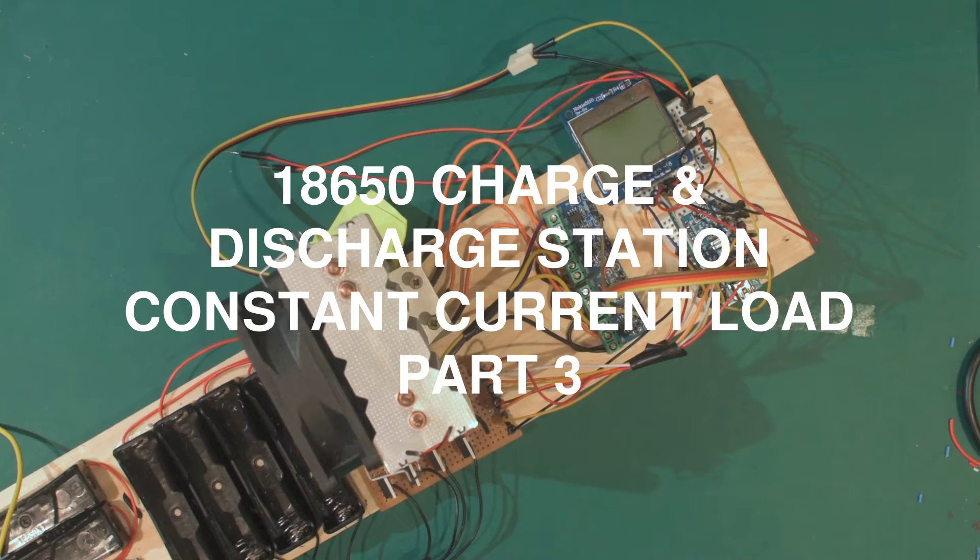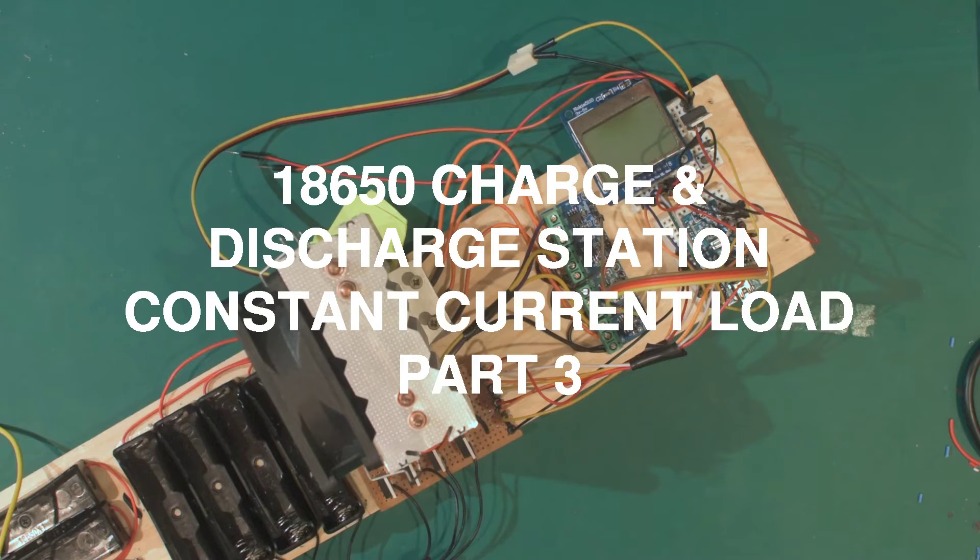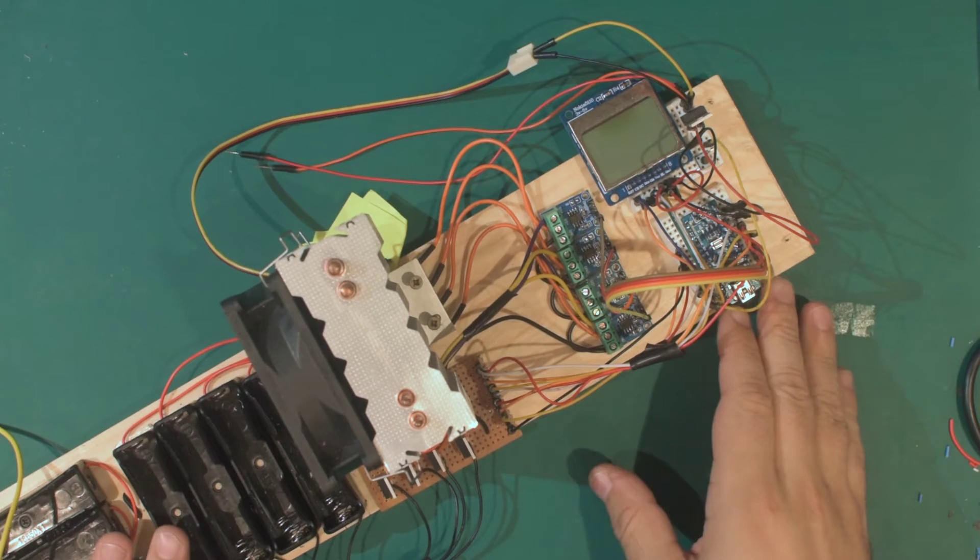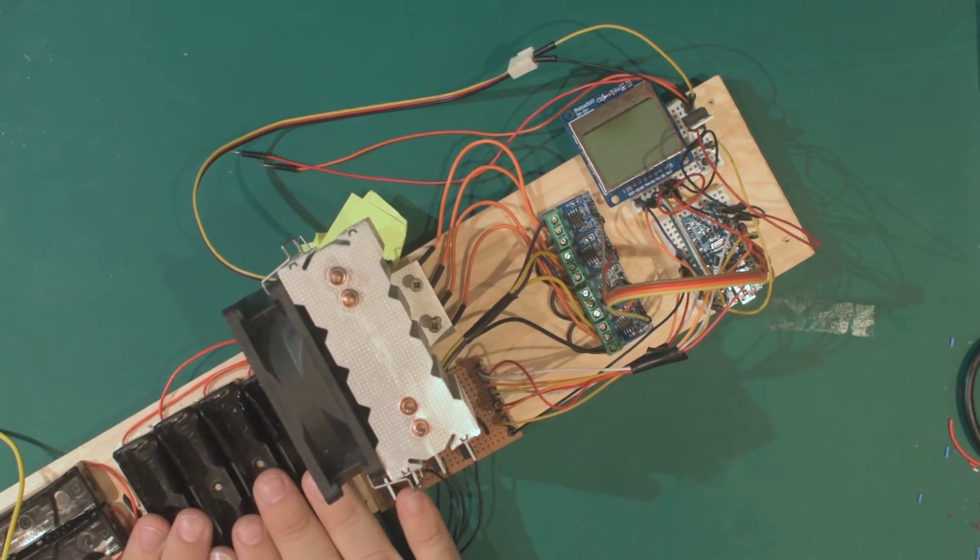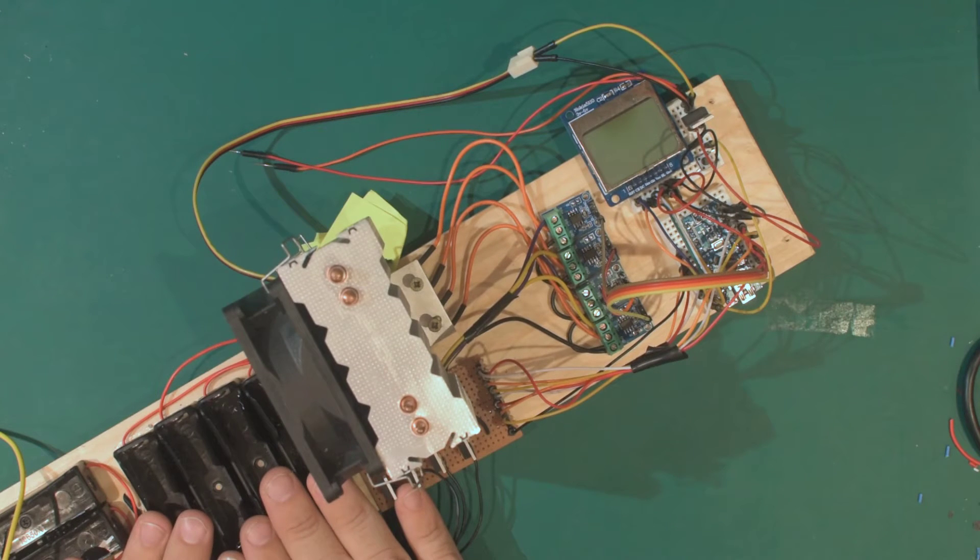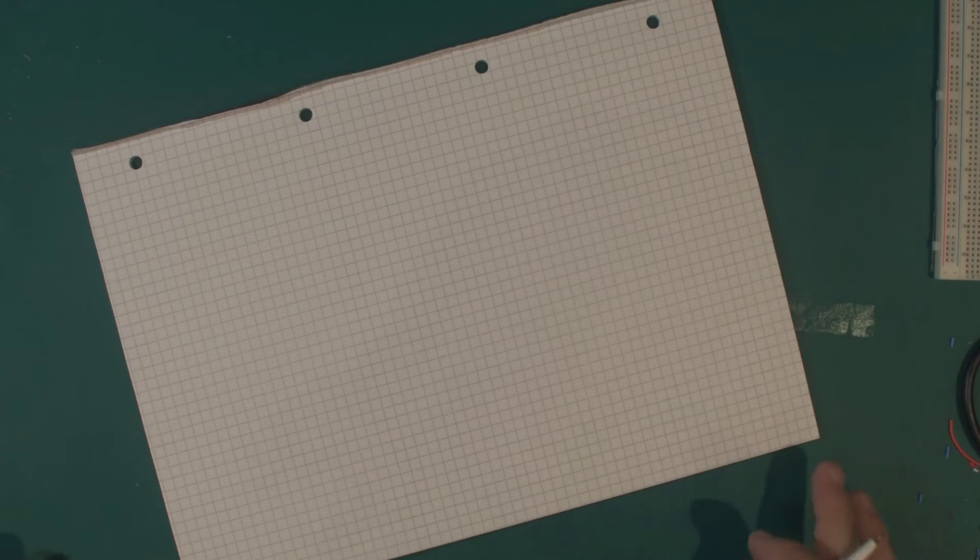Hey, welcome back to the bench. Since the last video, the parts have come in, so this time I want to add a constant current discharger to my 18650 discharge station. In this video I'm going to start the design and put some of it together. The first thing I'll do is work on the constant current load.